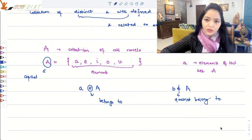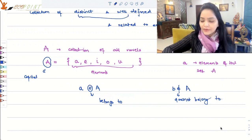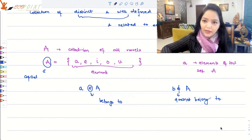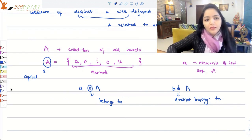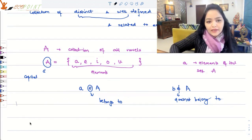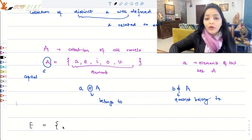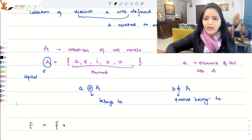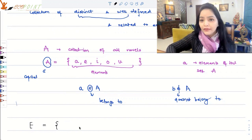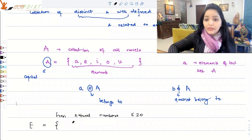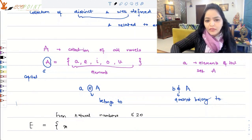So a set is a collection of some distinct entries, related to each other by some characteristic, and well-defined in nature. Now let me give you more examples to explain what I mean by well-defined. Let E be the set of all even natural numbers less than or equal to 20. There are two ways I can write it down. I can say: E = { x ∈ N | x is an even number less than or equal to 20 }. The slash means "such that" or "subject to".